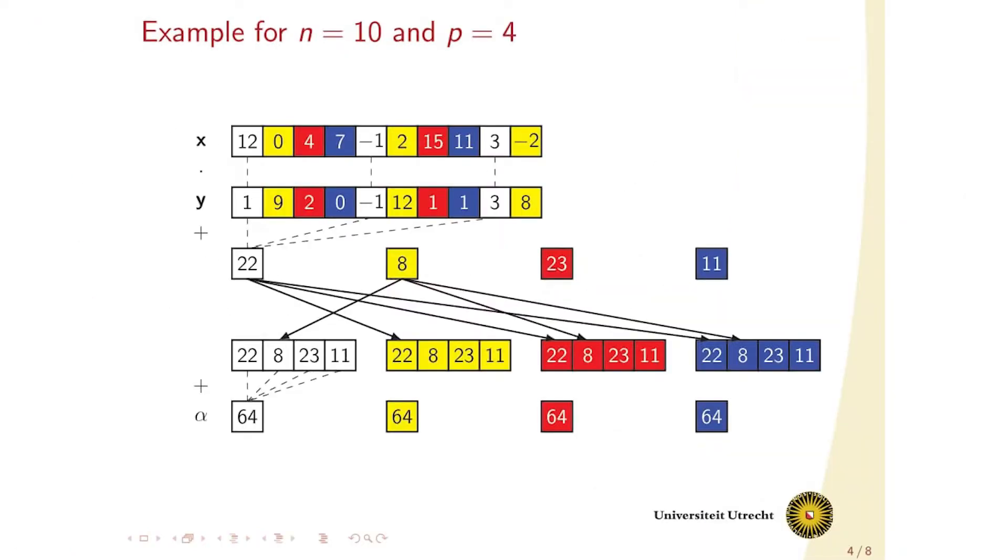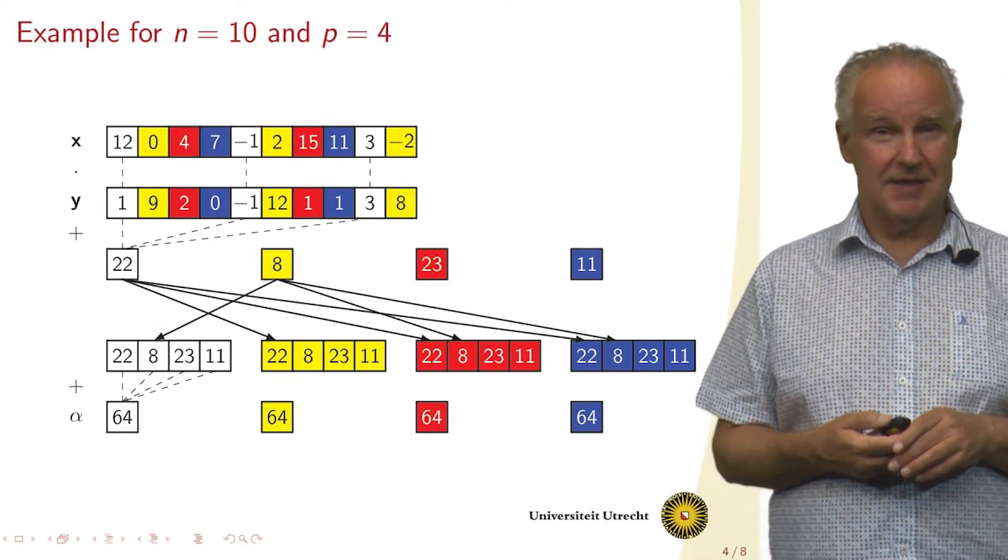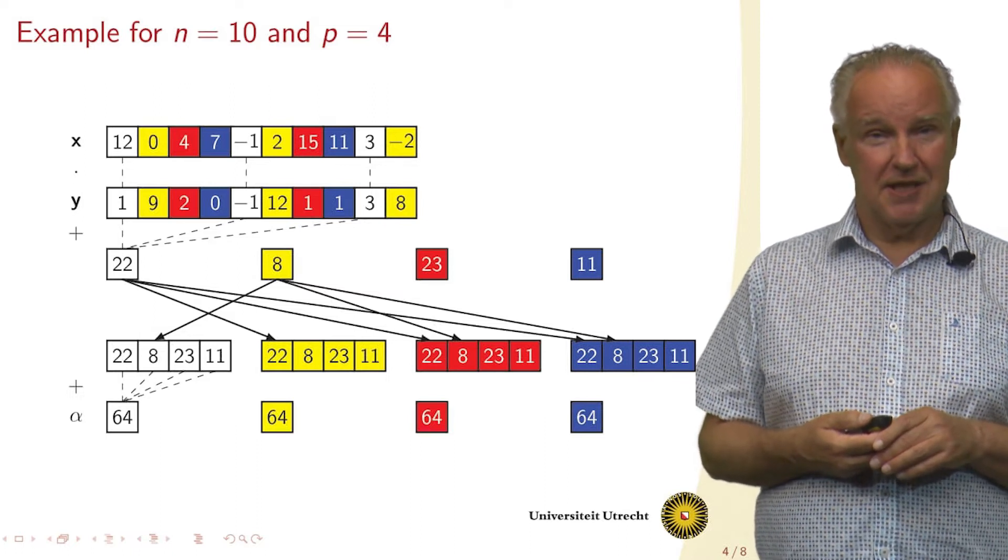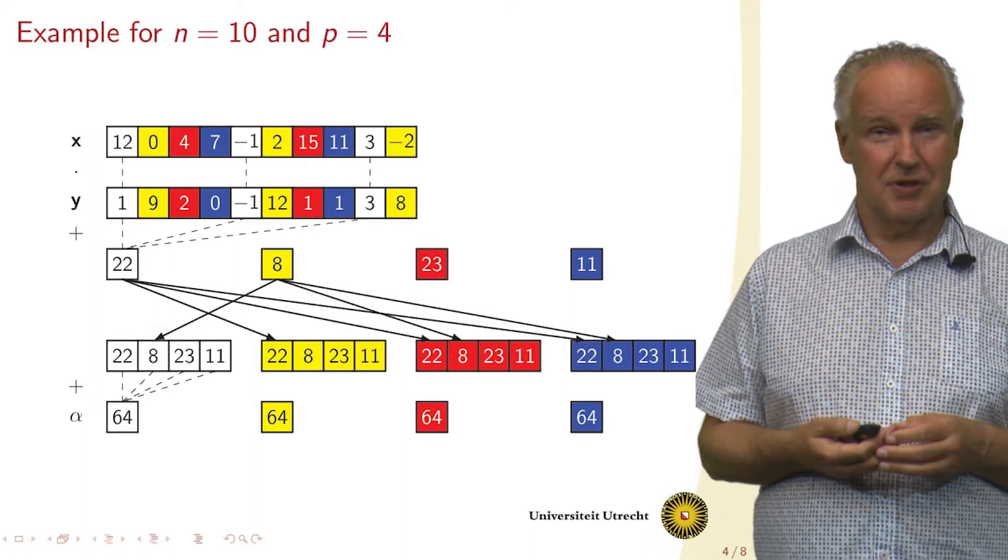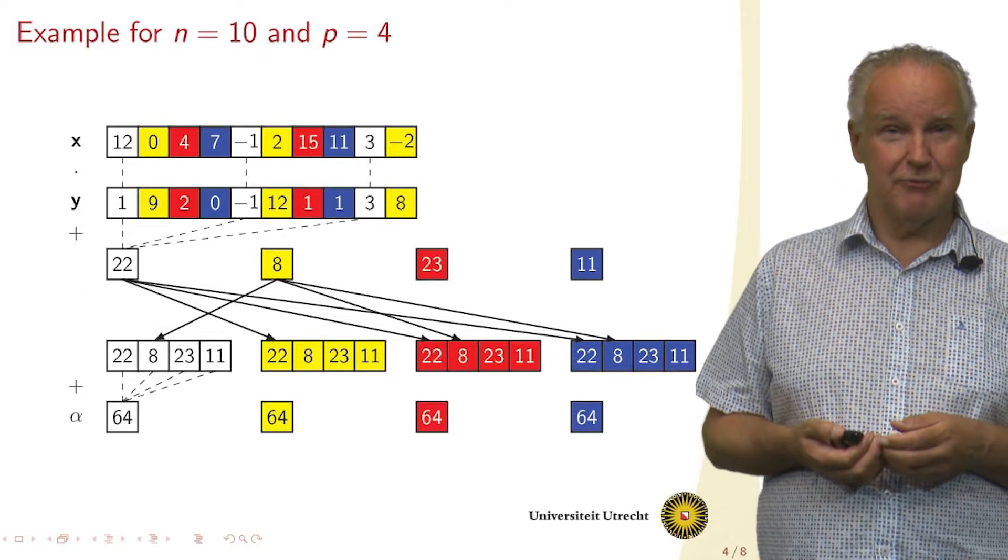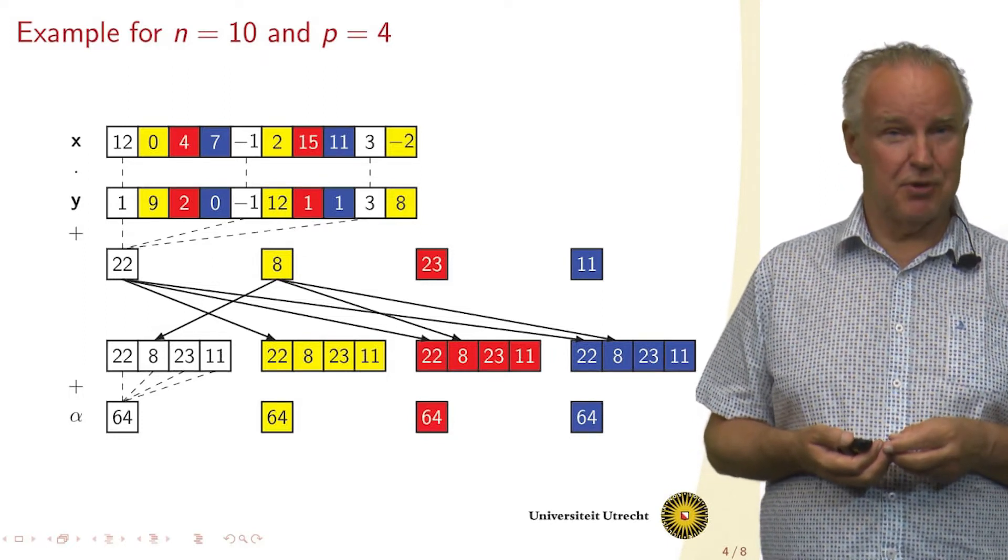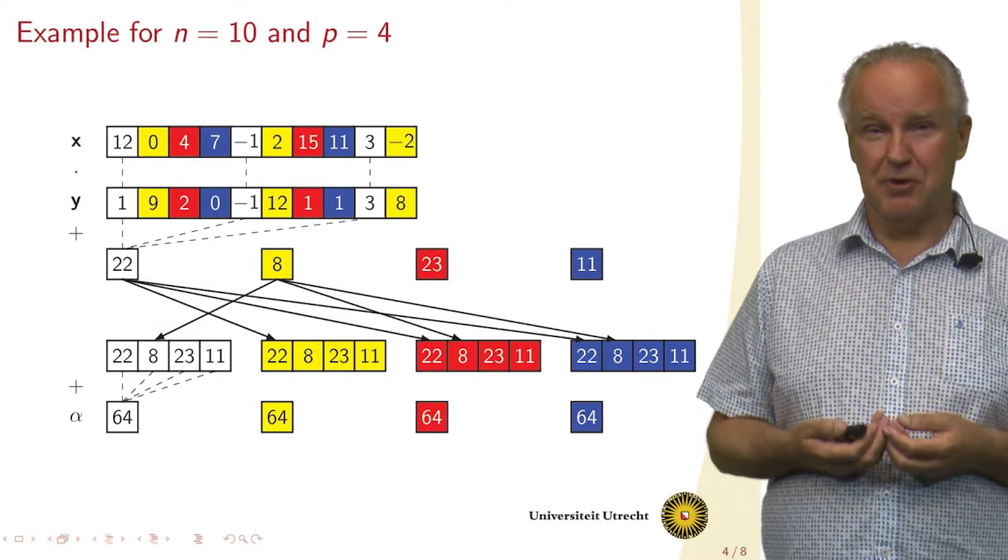So here we see an example. We have two vectors x and y, and the vectors they are spread out over four processors, again denoted by the colors white, yellow, red and blue. And in the vectors you see numbers. These are the components of the vectors. So the first component, component 0 of x is 12. And if we want to compute the inner product, what we can do is first compute the inner product for our local components.